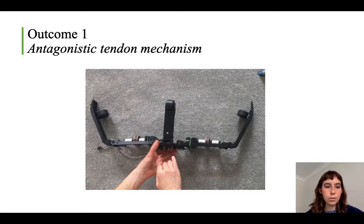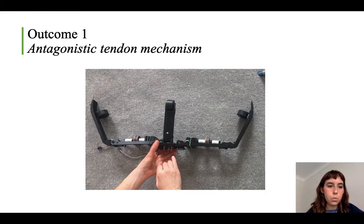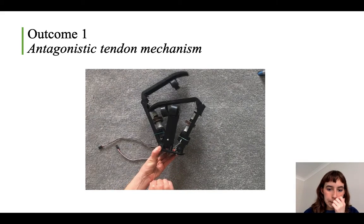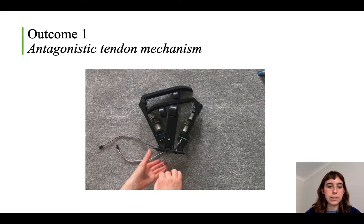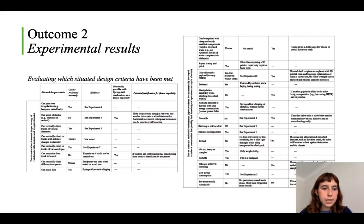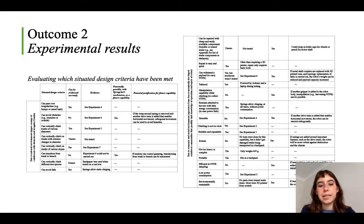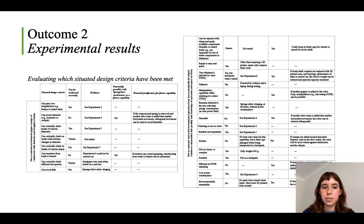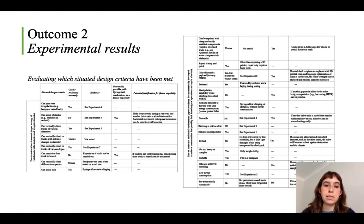The second outcome was a lower-priority feature developed separately from the climbing function: an antagonistic tendon mechanism. Each arm has two tendons — the first pair closes the arms and the second pair opens them. The third outcome was the experimental results from testing the final robot's capability. A large table evaluates which situated design criteria had been met, and I'll now go through the eight experiments carried out to test whether the eight measures-of-success criteria were achieved.